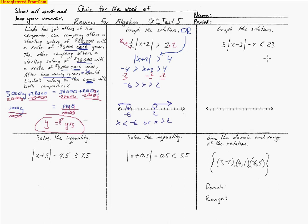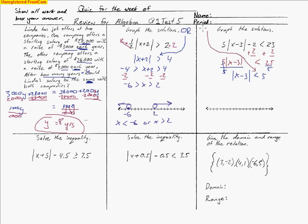The next problem requires some work — we need to add 2 and always isolate the absolute value. We have 5 times the absolute value of x minus 3 is less than 25. Dividing both sides by 5 cancels the 5s, leaving the absolute value of x minus 3 is less than 5. Now the absolute value is isolated. 'Less than' means an 'and' statement — all values will be between two numbers.